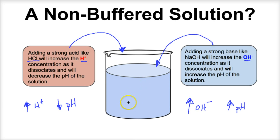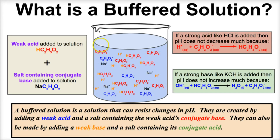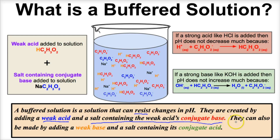Let's take a look at how a buffered solution works. In a buffered solution, if we add a strong acid or a strong base, this solution is going to resist changes in its pH — because a buffered solution is a solution that can resist changes in pH. Buffered solutions are created by adding a weak acid along with a salt containing the weak acid's conjugate base, or by adding a weak base and that weak base's conjugate acid.